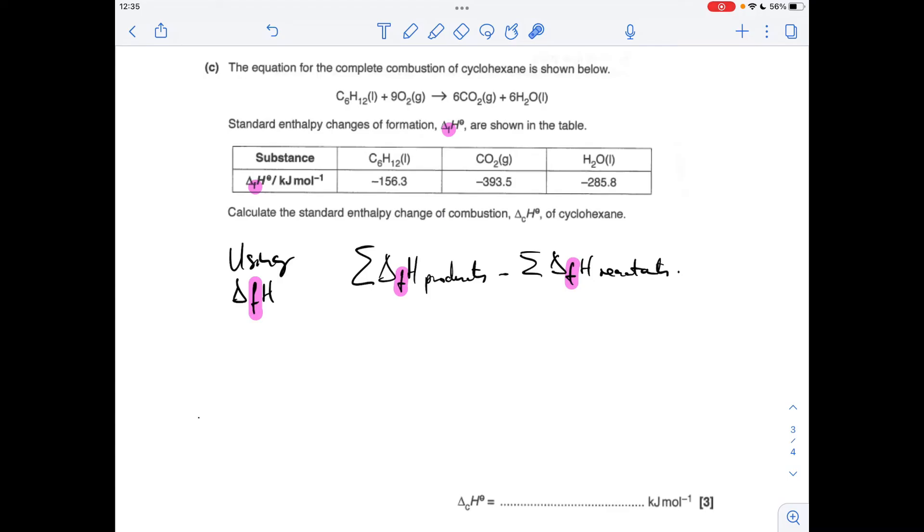And now for the last part of the question we've got to use these enthalpy changes of formation values. You can see I've highlighted all the little F's there. So we use an enthalpy change of formation data to calculate an enthalpy change for a reaction. So the reaction in question just happens to be an enthalpy change of combustion. But the point I always try to stress here is the data that you're using determines which method you use. So when you're using enthalpy changes of formation, you take the sum of the enthalpy changes of formation of the products and minus the sum of the enthalpy changes of formation of the reactants.